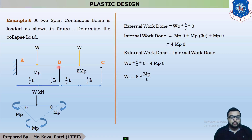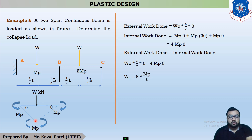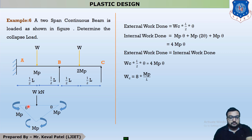The fixed support takes moment, the point of load also takes moment, and the intermediate support B is considered as a fixed support which also takes moment. So in span AB, all three points take moment. The deflection shape shows the collapse load WC. Since the load acts at the center, the deflection angle is theta on each side, making 2 theta at the center. External work done equals WC × (L/2) × theta.